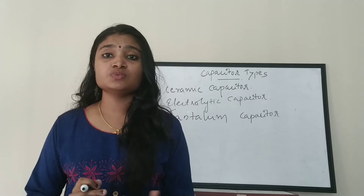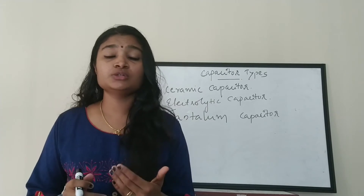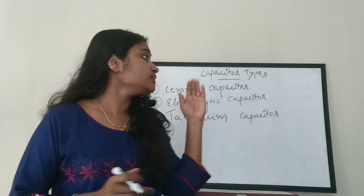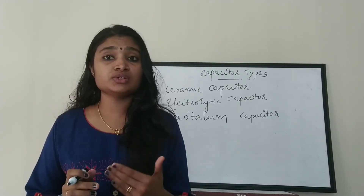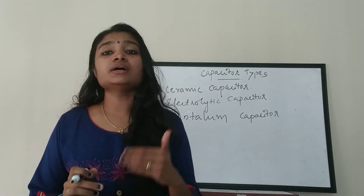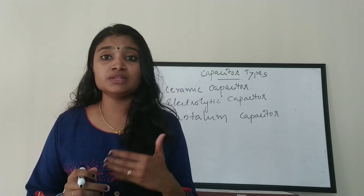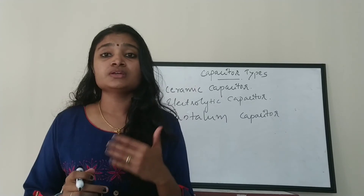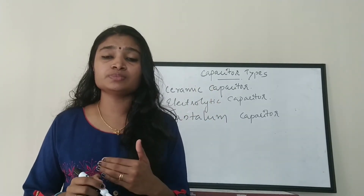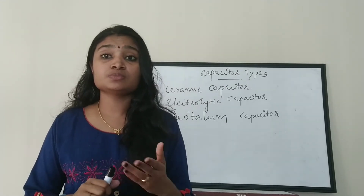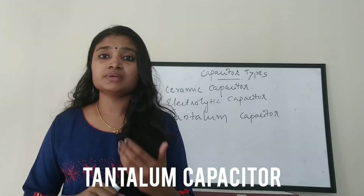The next type is the tantalum capacitor. It is similar to the electrolytic capacitor but smaller in size, since electrolytic capacitors are generally larger. Instead of aluminum, the metal tantalum is used — hence the name tantalum capacitor. Tantalum capacitors can typically be used up to a maximum of 35 volts.